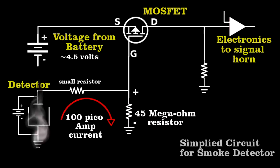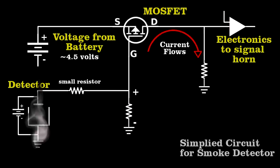If smoke enters the chamber, the tiny current stops. The MOSFET allows current to flow in this section of the circuit, which triggers the horn.